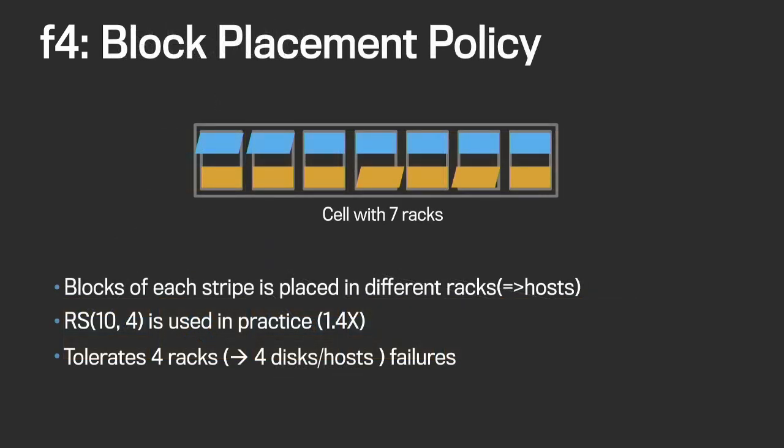In production, our placement policy is that we place blocks of each stripe in different racks. Also, for this explanation I used Reed-Solomon 5-to-2, but in actual production we use Reed-Solomon 10-to-4. What that gives us is that within our 14 racks, at any time we can lose four random racks but still be able to serve all the data stored there.